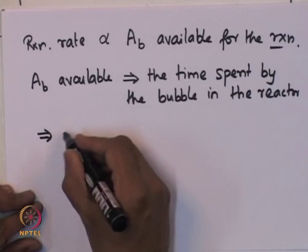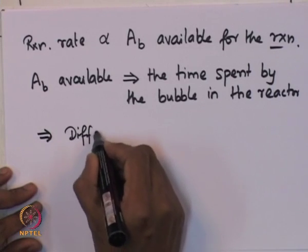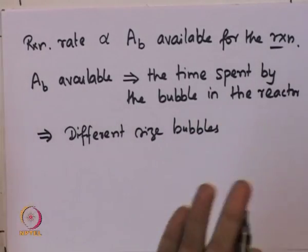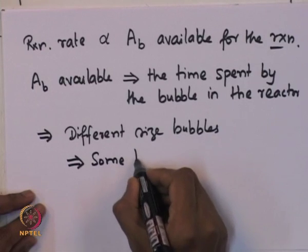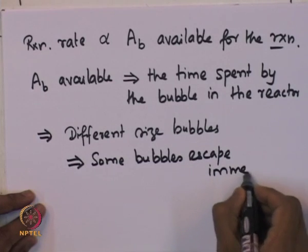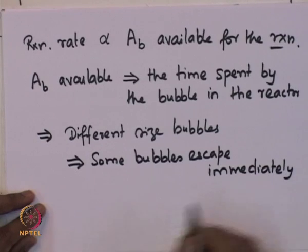The gas bubbles generated when sparged into the liquid are generally not all the same size, so different size bubbles are created. These different-sized bubbles simultaneously rise, and because bubbles are of different sizes, different bubbles rise at different velocities. As a result, some bubbles may actually escape immediately — as soon as they are created, they quickly go to the top of the liquid stream and leave the reactor.